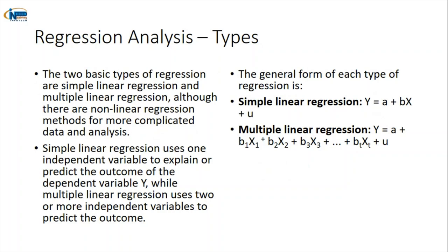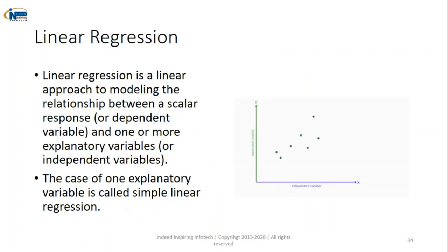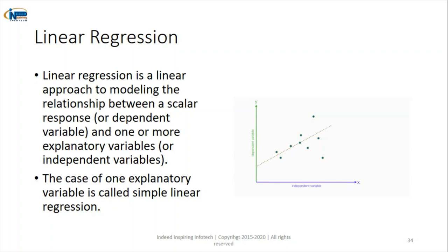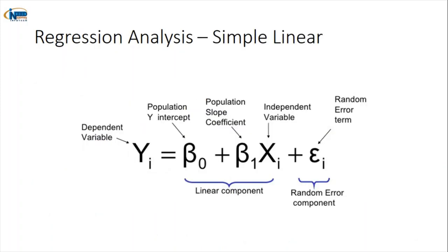In linear regression we have two types: simple linear and multiple linear. In simple linear regression, there is only one input and one output. For example, if it is raining will you go out — yes or no? Or if you run at 20 km/h, how much time will it take to reach? One input, one output. The equation has one X and one Y, with beta 1 as the population slope, beta 0 as the population intercept, and epsilon as the error term.